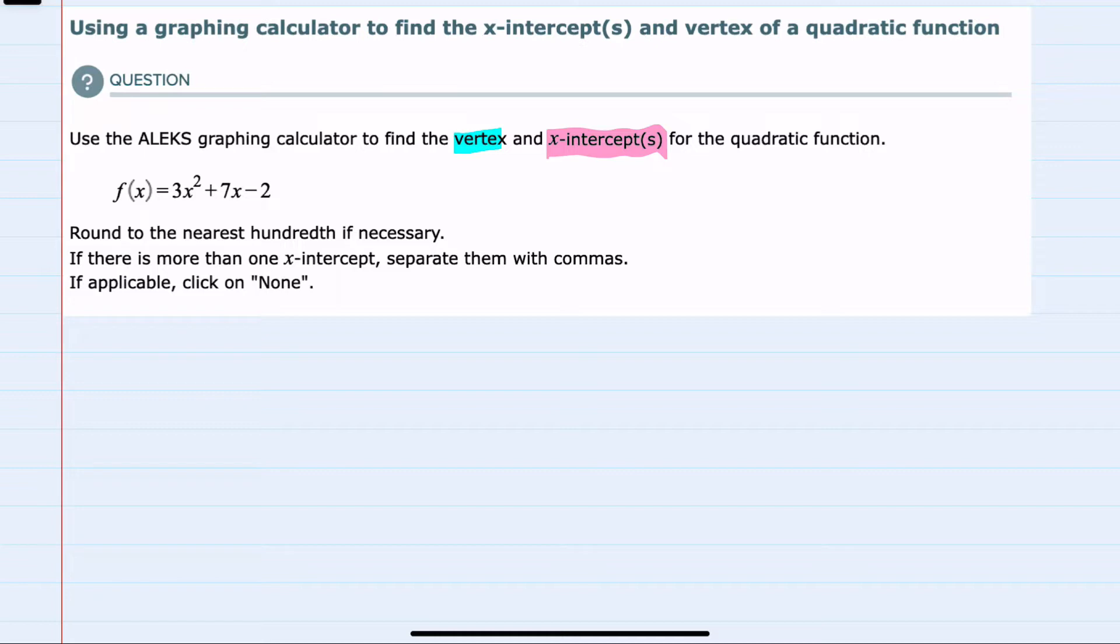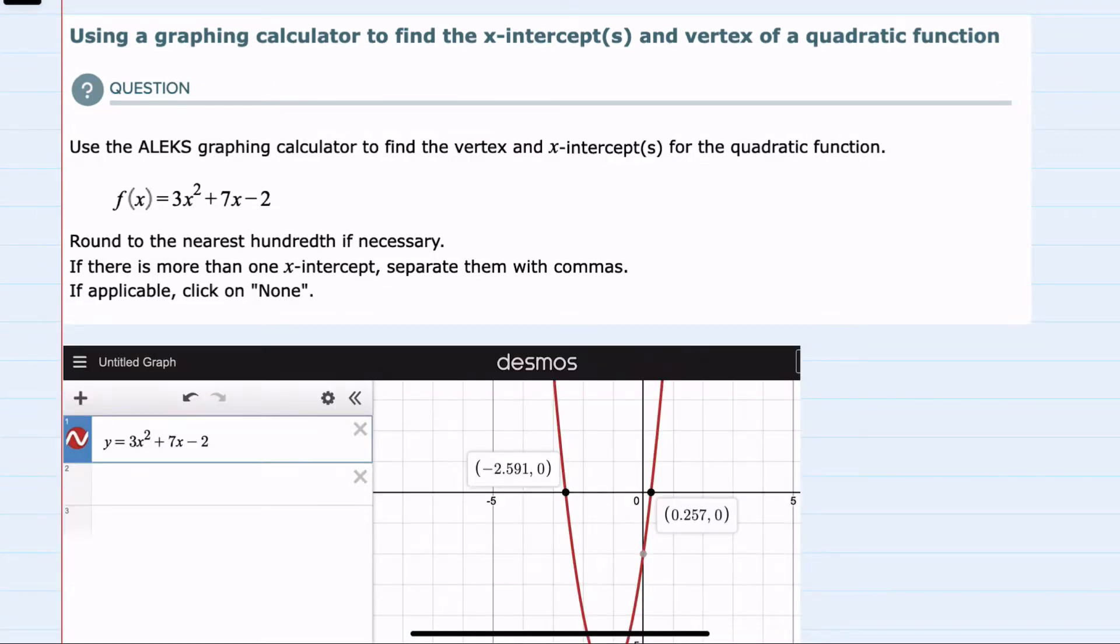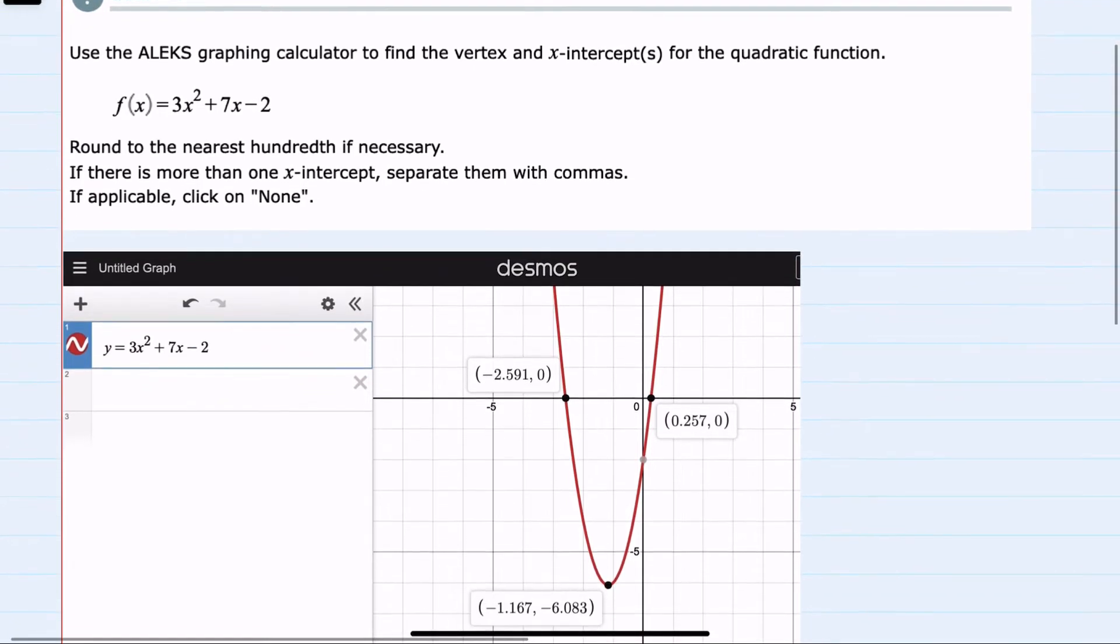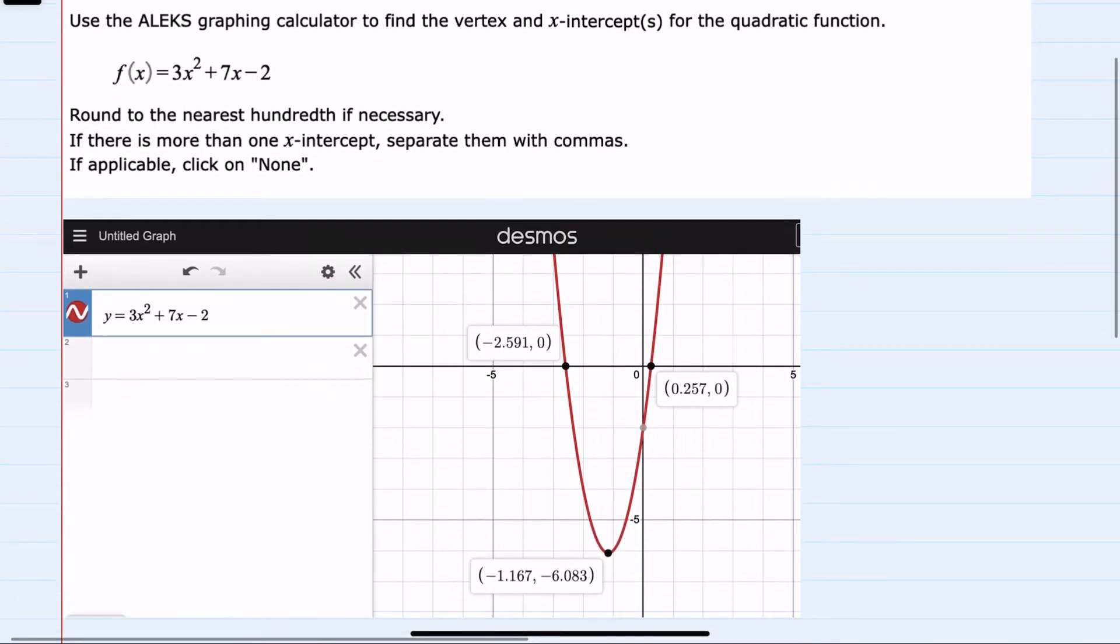And we're also asked to use a graphing calculator. So to do so, I plugged this function into Desmos and clicked on both the vertex and the x-intercepts.